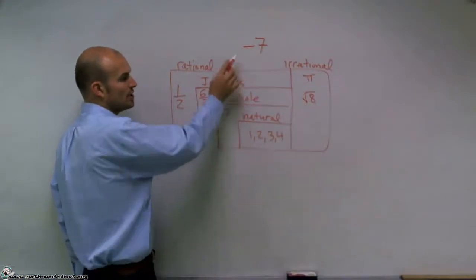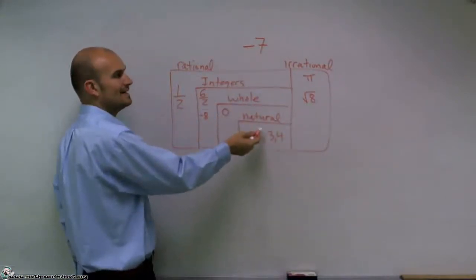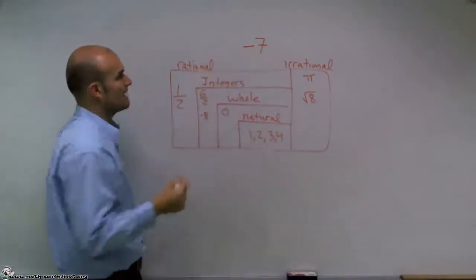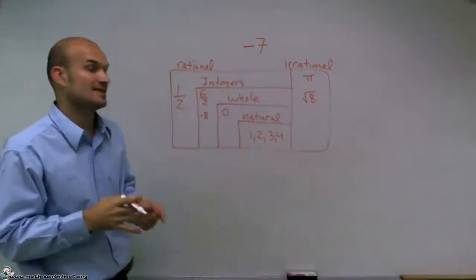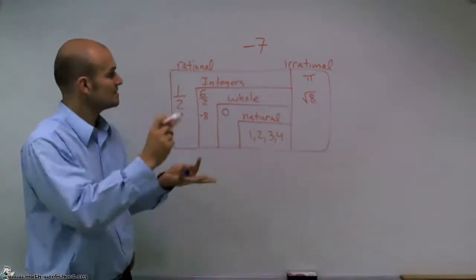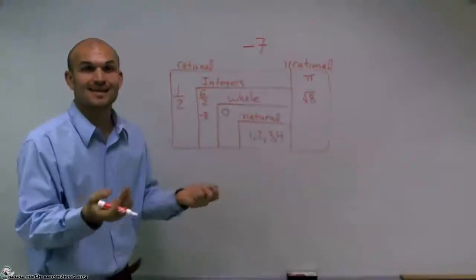However, no whole numbers are negative, nor are natural numbers negative. So therefore, negative 7 is only going to be contained in the set of real numbers, rational numbers, and integers. And that's it. Thank you.